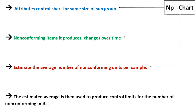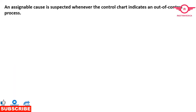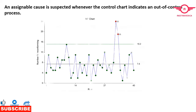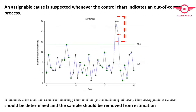The estimated average is then used to produce control limits for the number of non-conforming units. During this initial phase, the process should be in control. An assignable cause is suspected whenever the control chart indicates an out-of-control process. If points are out of control during the initial phase, the assignable cause should be determined.